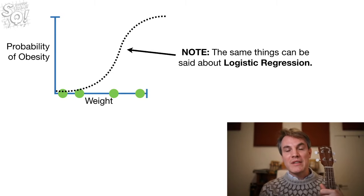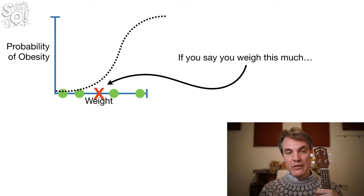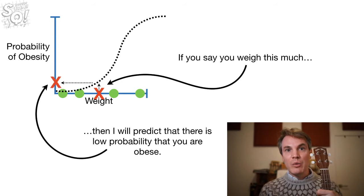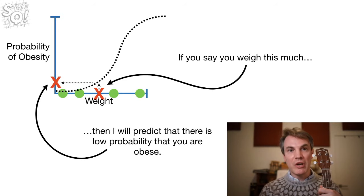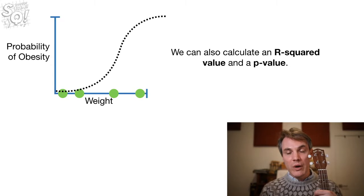Note, the same things can be said about logistic regression. If you said you weigh this much, then I will predict that there is a low probability that you are obese. So I can make a prediction. And also with logistic regression, we can calculate an R-squared and a p-value. And that will tell us if there is a relationship between weight and the probability of obesity.